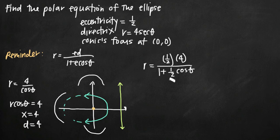Now we simplify. In the numerator, 4 × 1/2 = 2. In the denominator, we find a common denominator. The 1 multiplies by 2/2, giving 2/2 + (1/2)cos(θ) = 2/2 + cos(θ)/2.